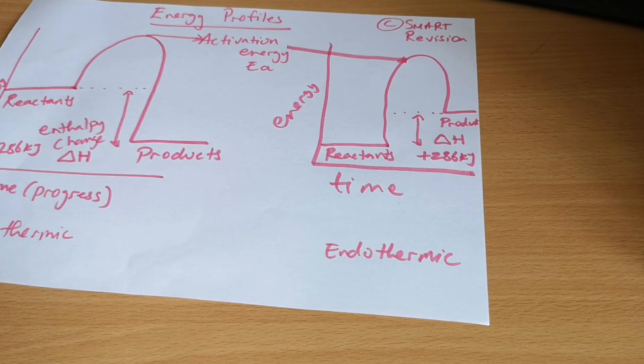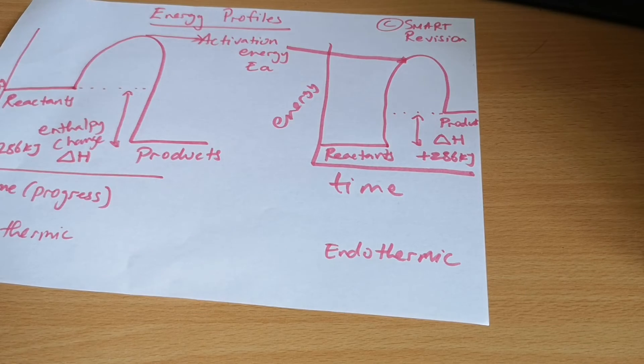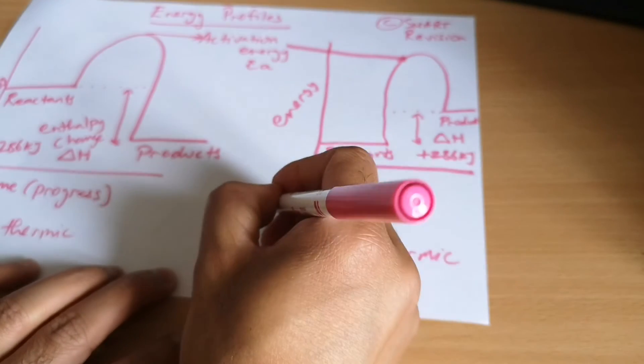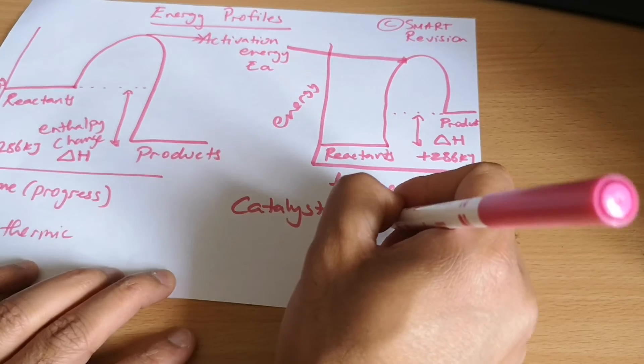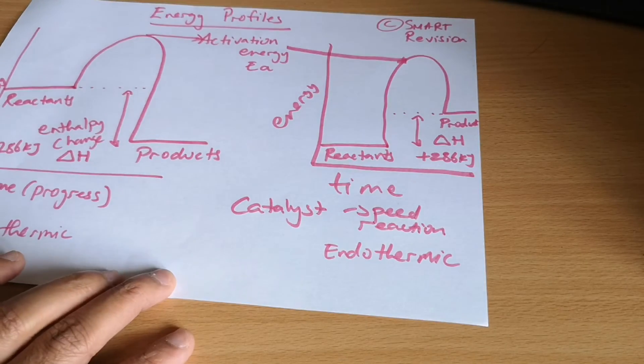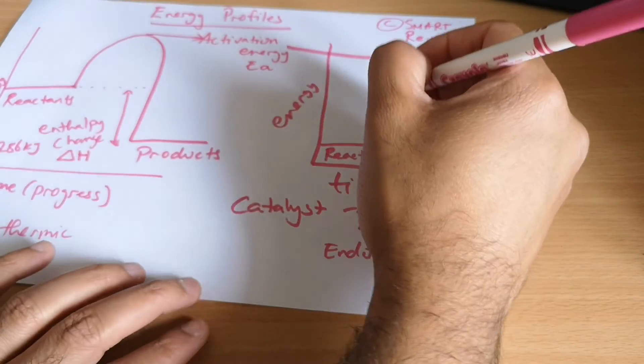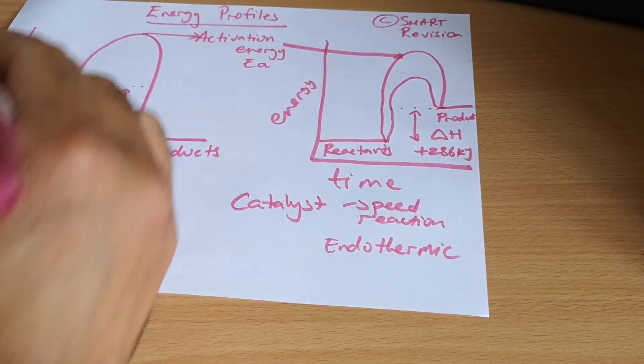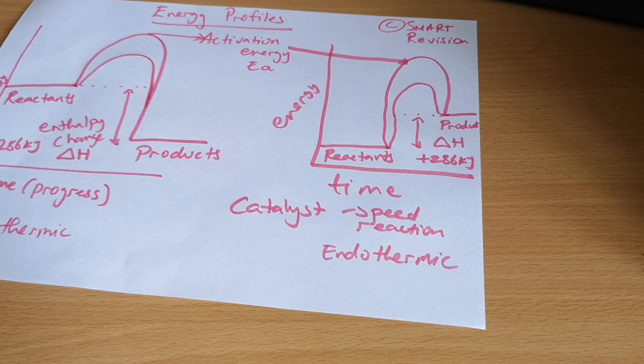You can lower the activation energy and I can do that by using a catalyst. So this is going to speed the reaction up. So what does it do on these? It's quite simple, it actually provides a different pathway and it will do that there. So it lowers the activation energy.